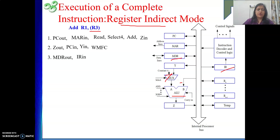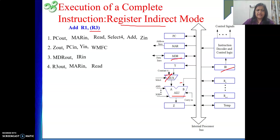After this we know our data is in memory and one operand is in a register, and we need to add. So we start the memory cycle: R3 out. The R3 content cannot be given directly to memory on the address line, so we send it to MAR (MAR in). Then we give the read signal, because the protocol says: give the address, give the signal, wait for the data to come, then proceed with the operation.